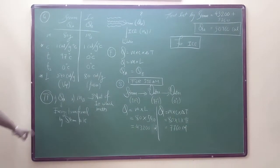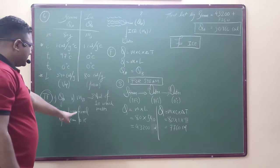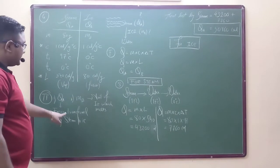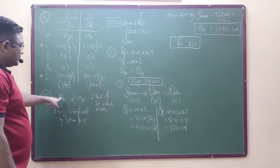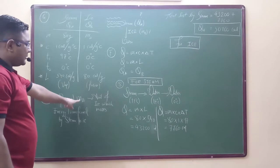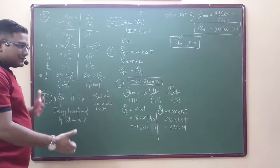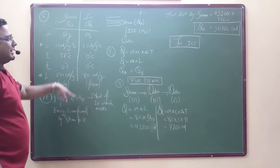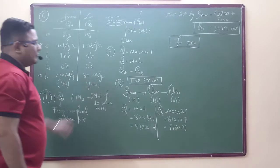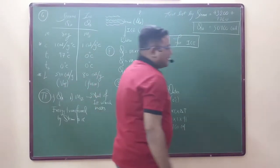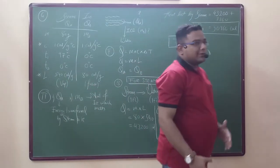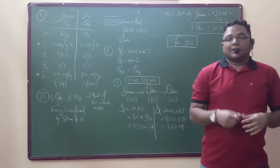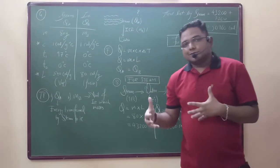To find: there are two things to find. First, the energy transferred by steam to ice, which is Q. Second, the amount of ice which melts in this process, which is MB. We know the formula. This is a fast-track revision series — you have already been taught this in your class.